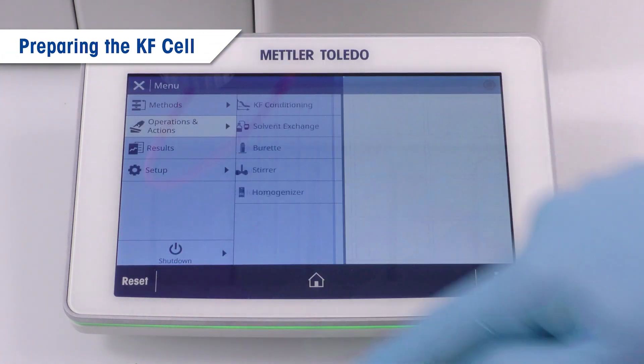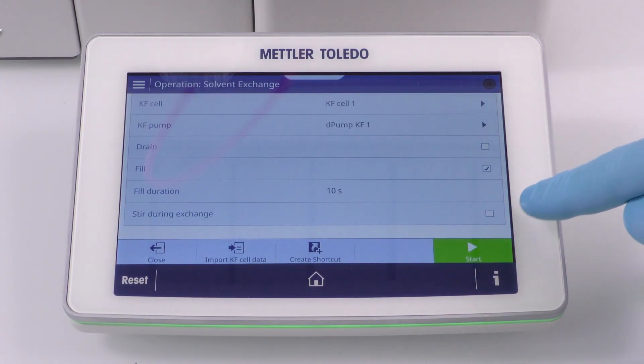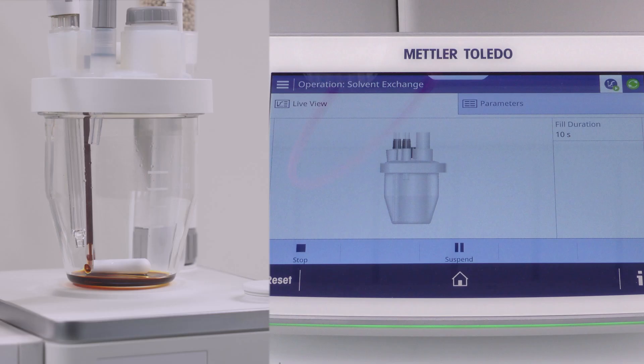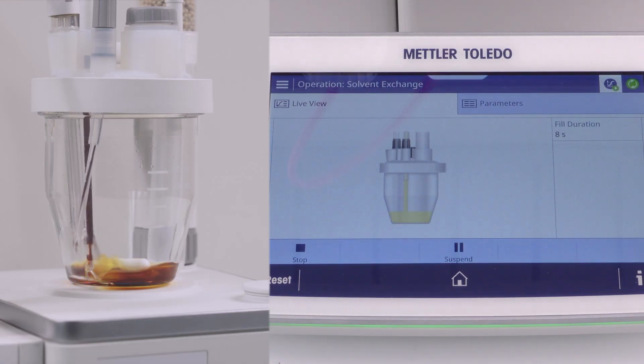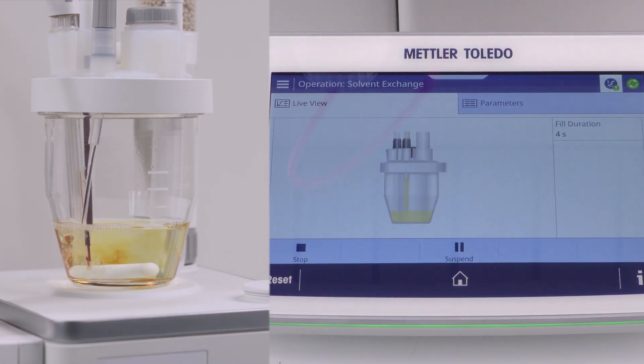Let's now fill the KF cell using the operation solvent exchange. Stop the filling process manually as soon as the solvent level reaches the pins of the polarized sensor.